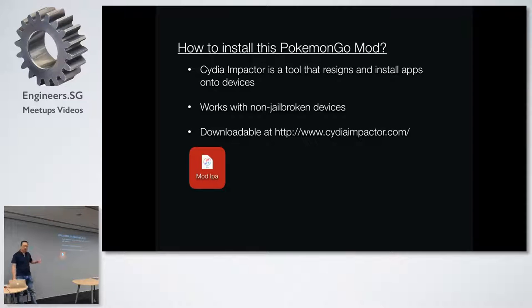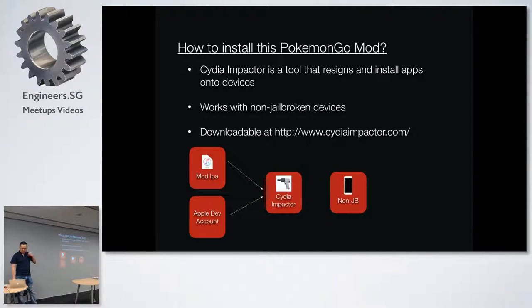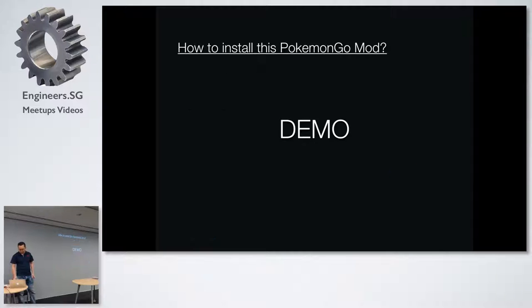What do you need? You need your Apple developer account, CydiaImpactor, and you can use your own non-jailbroken device. With CydiaImpactor, provide the mod IPA file, log in with your Apple developer account, and install the mod app onto your non-jailbroken phone.